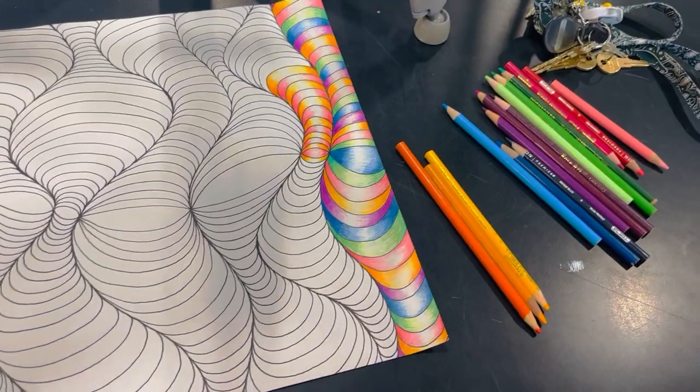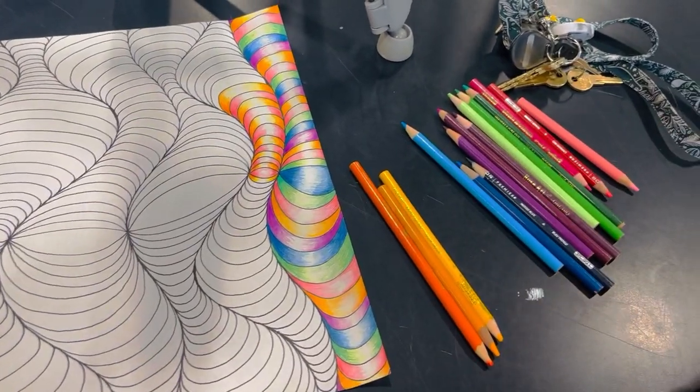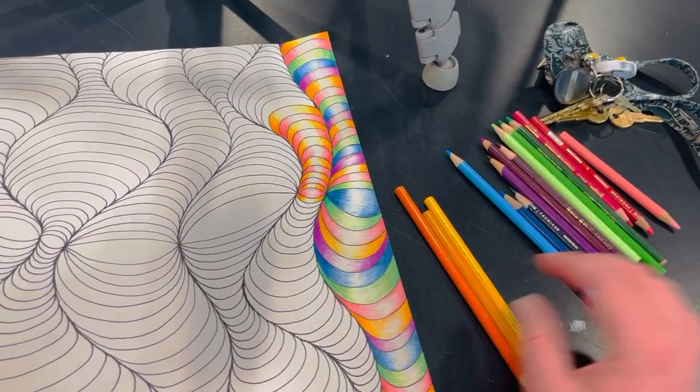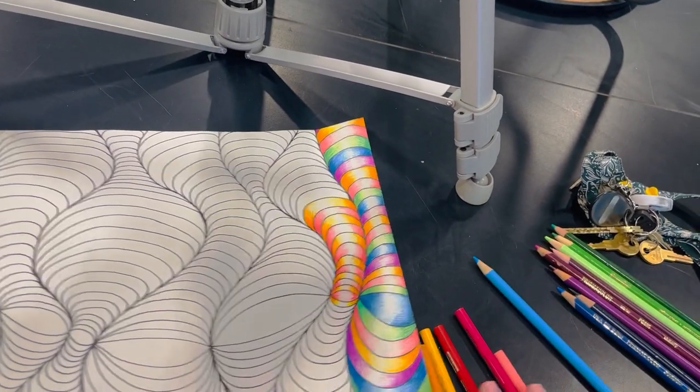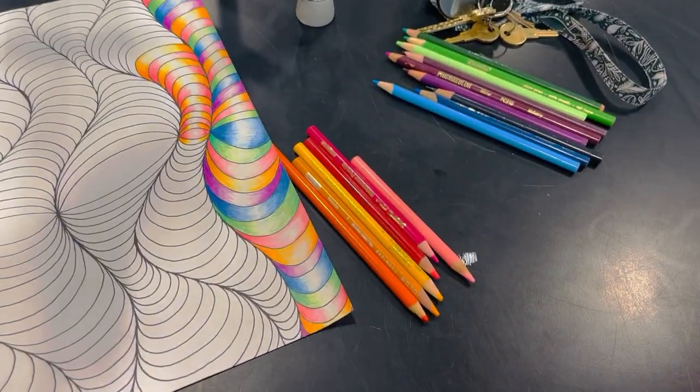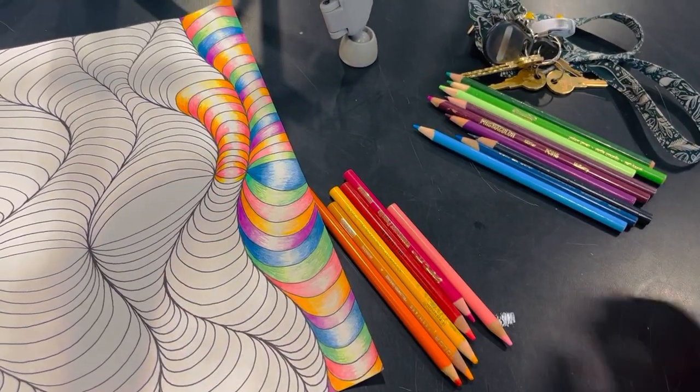So if you want to do all the colors of the rainbow, you're going to have a whole bunch of colored pencils. If you just do two, you'll have six colored pencils like this, if I chose pink and orange to do for the whole thing.